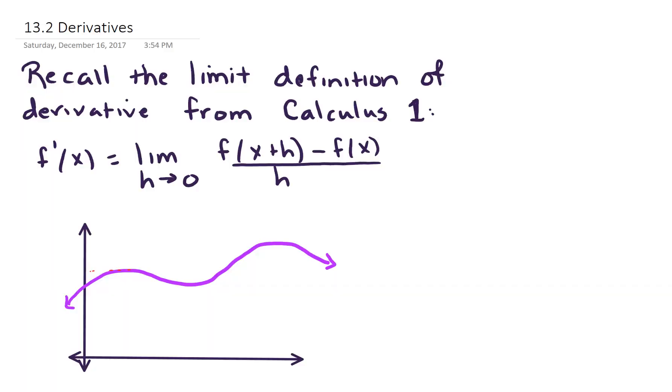In this video we're going to talk about derivatives of vector-valued functions. So I'd like to recall the limit definition from calculus 1. And that limit definition says that the derivative of f of x, f prime of x, equals the limit as h goes to 0 of f of x plus h minus f of x all over h.